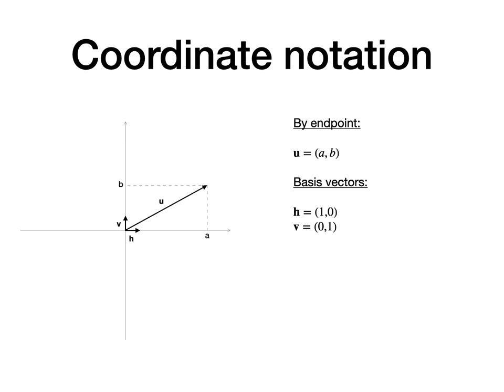With this notation, u is written as a, b, h as 1, 0, and v as 0, 1, but under the hood they still mean arrows in space.